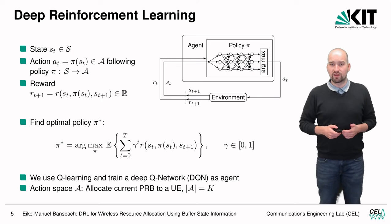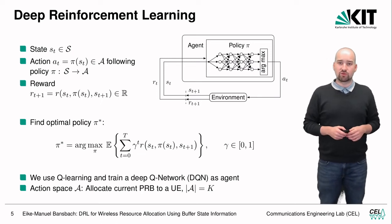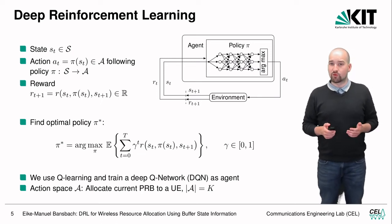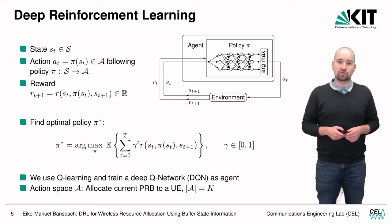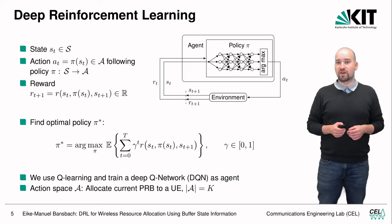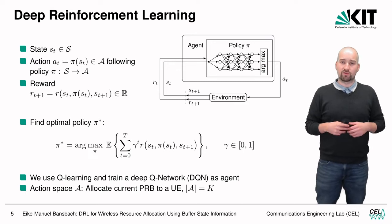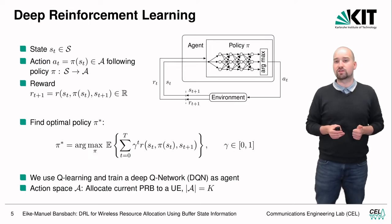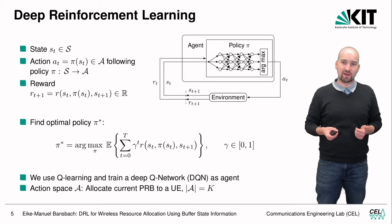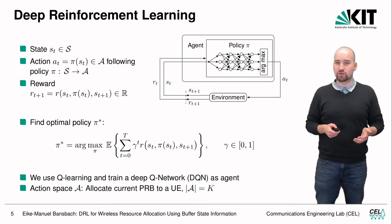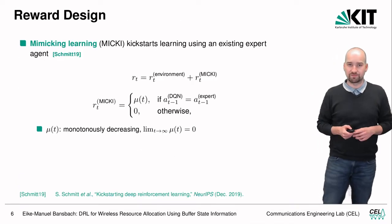We use Q-learning to train the deep Q-network. For resource allocation, the action space has size equal to the number of user equipments K, because at every allocation step we have one physical resource block to allocate to one of the K users. The decision is which user this resource block is allocated to.